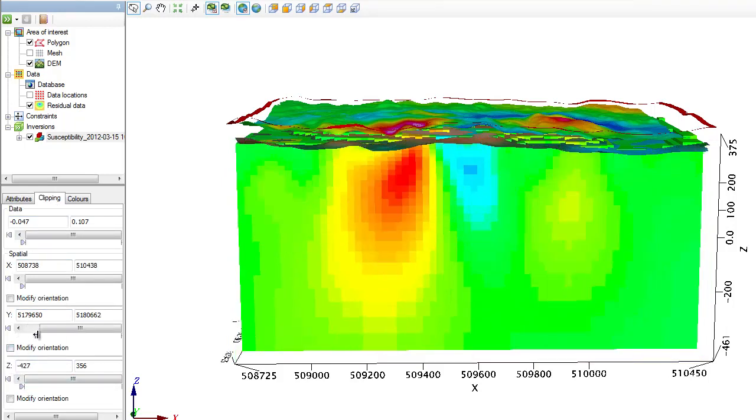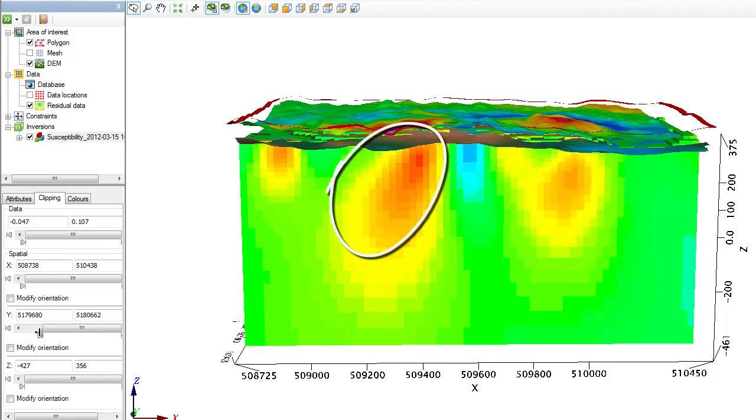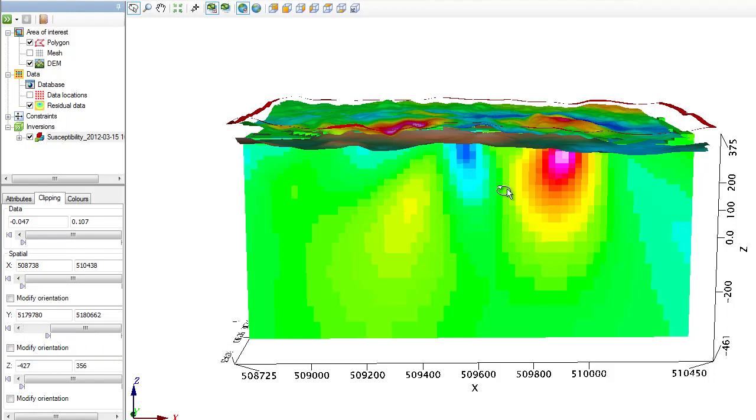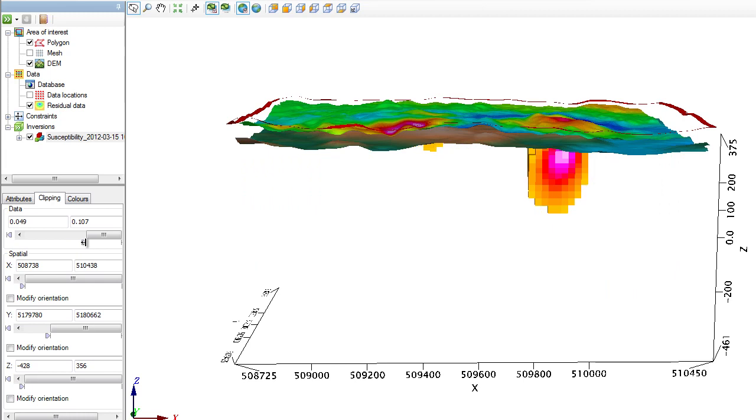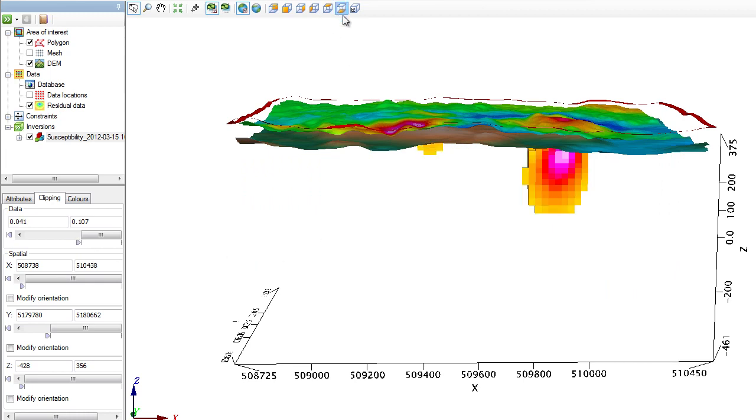Let me slice through this model. Right here is where the high susceptibility is concentrated. Although I have a secondary item located right here, I'm not really interested in this high susceptibility area because I know that it doesn't have a concurrent gravity high. I will now clip the data to show only the high susceptibility areas. And here is a look from below.